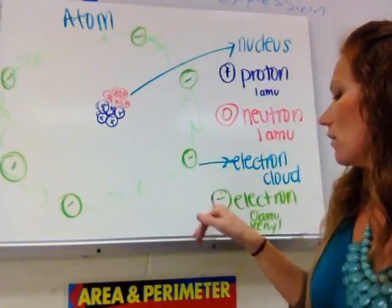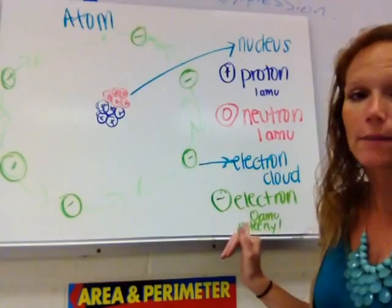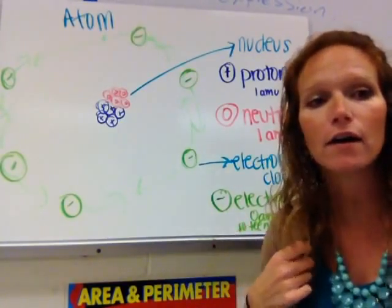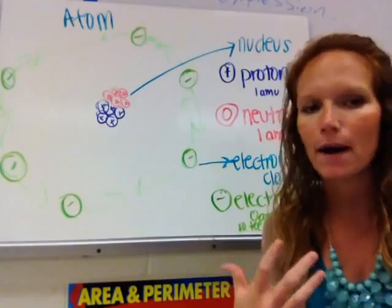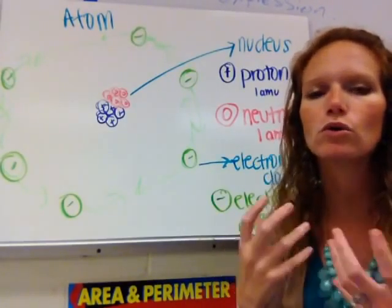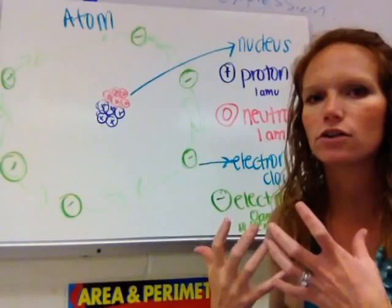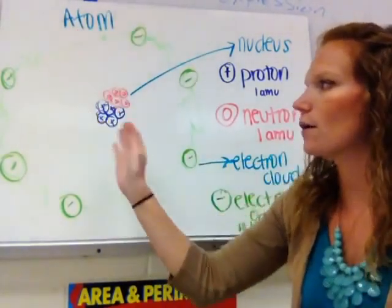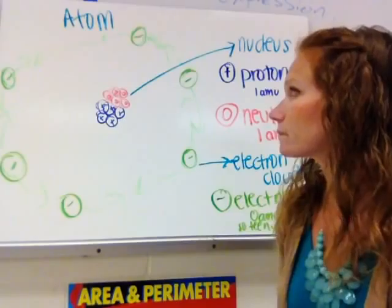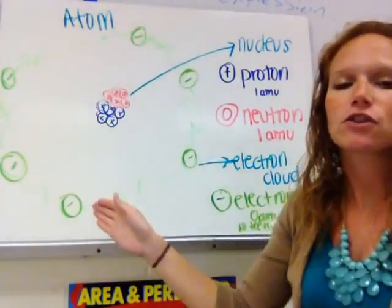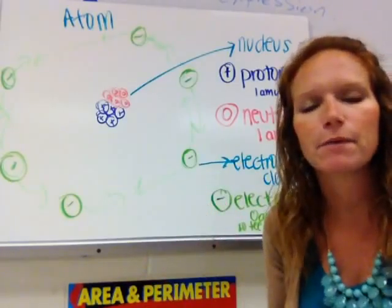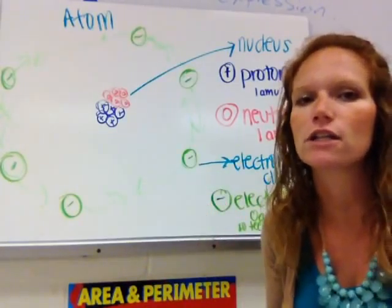In the electron cloud are the electrons, which have zero atomic mass units, and that just tells you how teeny tiny small they are, because we don't even talk about them as having mass. They do have mass, they're just so small, and that mass is such a small portion of the overall mass of the whole atom that we don't even discuss it. Remember, the electrons in the electron cloud do not just sit there — they're moving very, very fast, and it's hard to pinpoint their location at any one time.